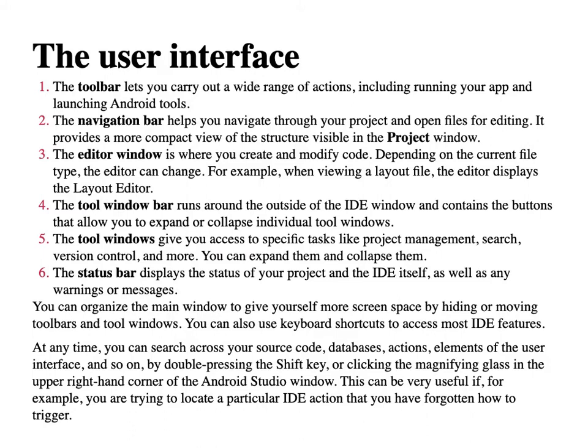The navigation bar helps you navigate through your project and open files for editing — it provides a more compact view of the structure visible in the project view. The editor window is where you create and modify code. Depending on the current file type, the editor can change — for example, when viewing a layout file, the editor displays the layout editor. The tool window bar runs around the outside of the IDE window and contains buttons that allow you to expand or collapse individual tool windows.